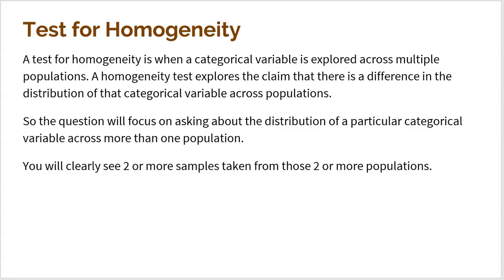A test for homogeneity is when a categorical variable is explored across multiple populations. It explores the claim that there is a difference in the distribution of that categorical variable across populations. For example, if we're looking at brands of vehicles — Ford, Chevy, Volvo, Audi, Lexus — across five different countries like Germany, Russia, Spain, the United States, and Canada, we're looking at whether there is a difference in the distributions of car manufacturers across those different populations.